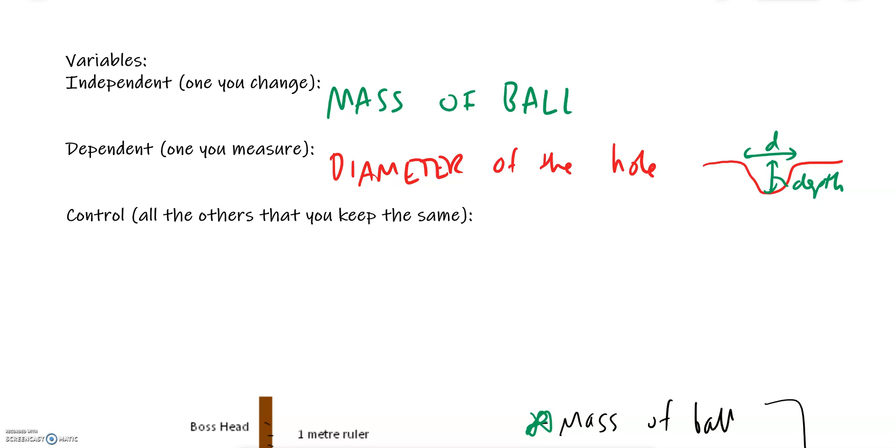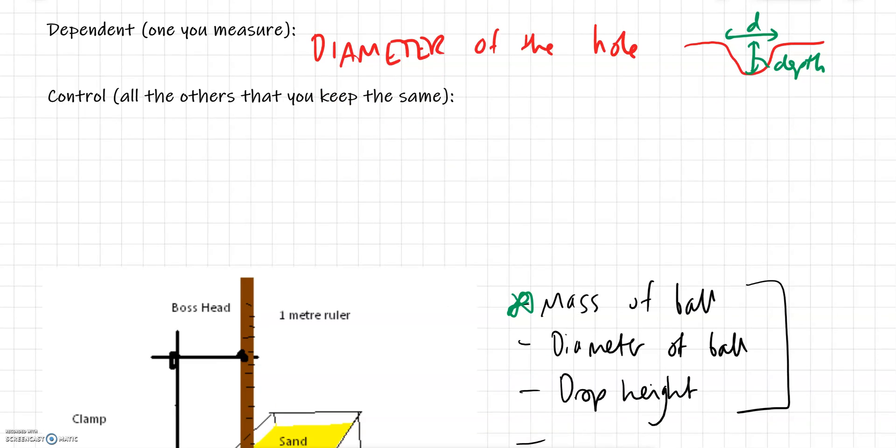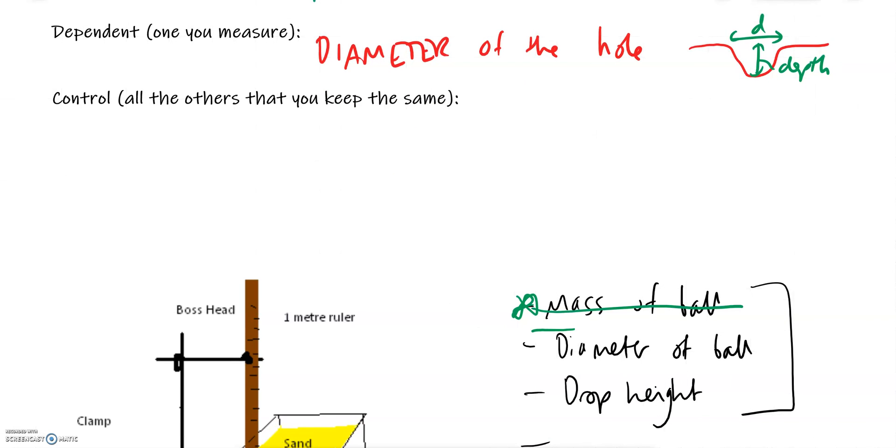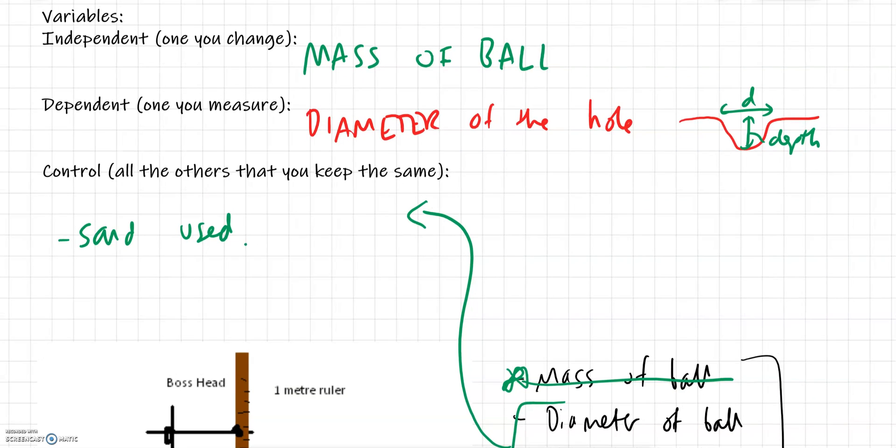Now once chosen those two, all other variables have to go into the control variable box. So for example, we've done the mass of the ball, so these two need to be in the control variables here, so diameter of ball and the drop height, otherwise they'll affect the experiment. Other things would be for example the sand used. Those are probably the key ones there. Always a really good way to start, laying out all the variables.